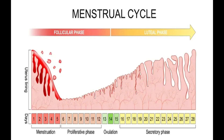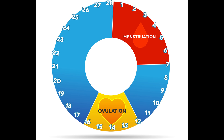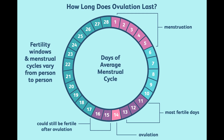The menstrual cycle is a recurring set of changes in the female reproductive system. Its main purpose is to prepare the uterus for a potential pregnancy. Typically it lasts about 28 days, though cycles can range from 21 to 35 days. Understanding this cycle is key to understanding fertility and reproductive health.